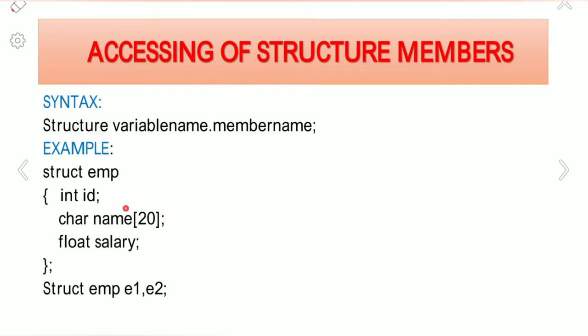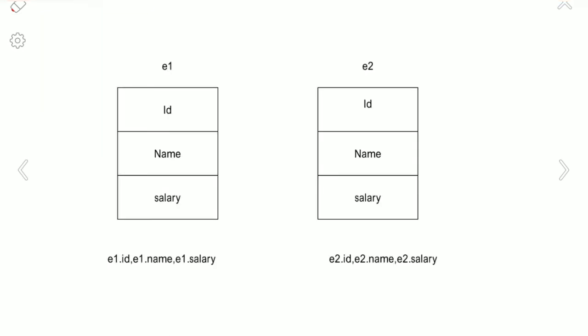But if you link the variable name and the member name, it becomes meaningful. For example, e1.name means the first employee's name, and e2.ID means the second employee's ID. The link between the member and the variable is done using the structure member operator — the dot operator, also known as the period operator.